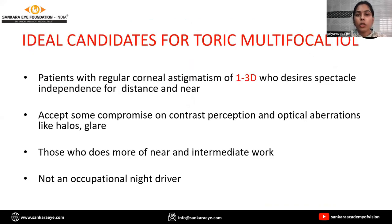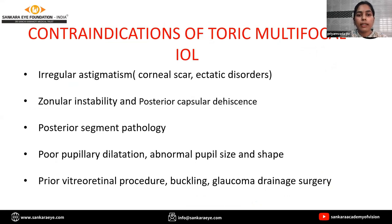The ideal candidates for toric multifocal IOL are patients with regular corneal astigmatism of 1 to 3 diopters who desire spectacle independence for distance and near, those who accept some compromise on contrast perception and optical aberrations like halos and glare, those who do more near and intermediate work, and those who are not occupational night drivers. The contraindications include irregular astigmatism, zonular instability and posterior capsular dehiscence, posterior segment pathologies, poor pupillary dilatation, abnormal pupil size and shape, and prior vitreo-retinal procedures, buckling, or glaucoma drainage surgeries.